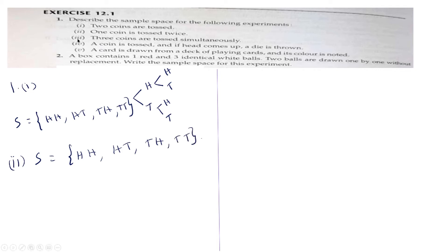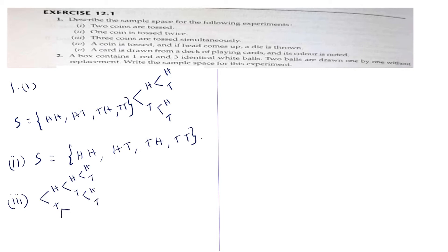Coming to the third subdivision: three coins are tossed simultaneously. When three coins are tossed simultaneously, in the first coin we may get head or tail, in the second coin the outcome is either head or tail, and in the third coin head or tail.